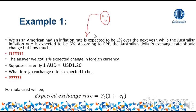Now, we as an American, the American inflation rate will be our domestic and in the American currency, which is the USD, will be our domestic currency as well. We expect our domestic inflation rate to be 1% for the next year and the Australian inflation is expected to be 6% for the next year.